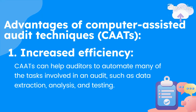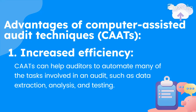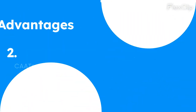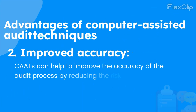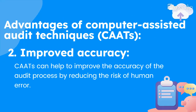1. Increased Efficiency: CAATs can help auditors to automate many of the tasks involved in an audit, such as data extraction, analysis, and testing. 2. Improved Accuracy: CAATs can help to improve the accuracy of the audit process by reducing the risk of human error.